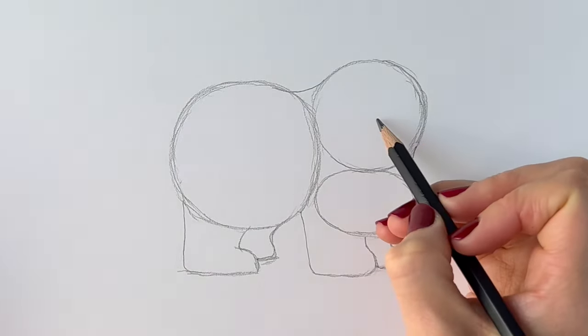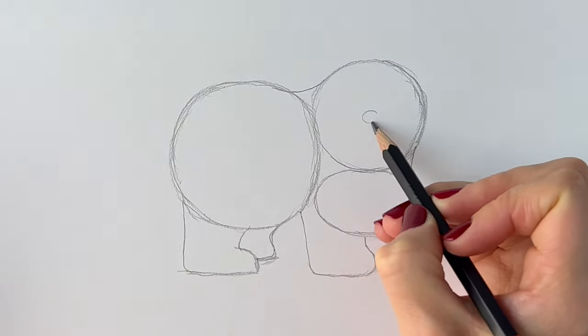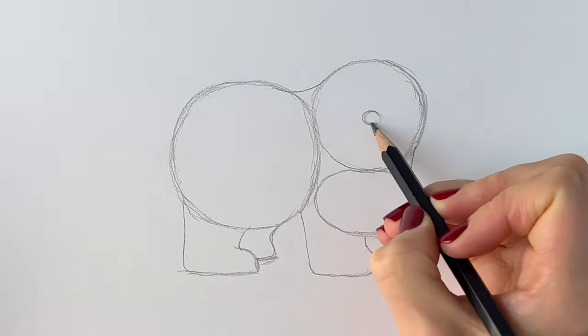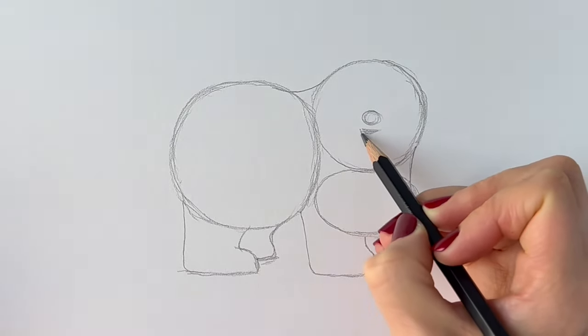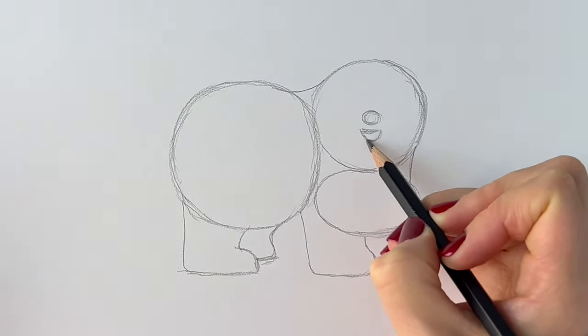And now right in the centre of this circle we're going to add the nose. So just a little circle there. And the tongue which is going to look like this. There we go.